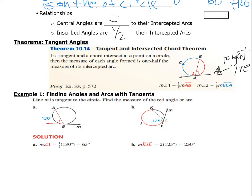The chord goes from B to A, where A is the point of tangency, so the chord and tangent meet at A. This forms two angles: angle one and angle two. Angle two intercepts the big arc BCD, and angle one intercepts the smaller arc BA. Each angle equals one half of its intercepted arc.